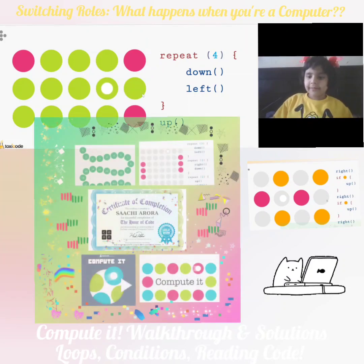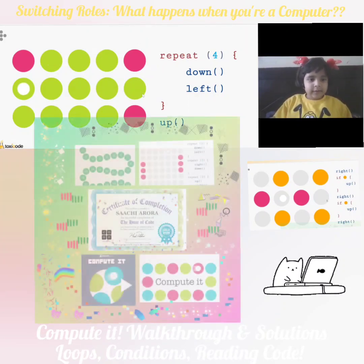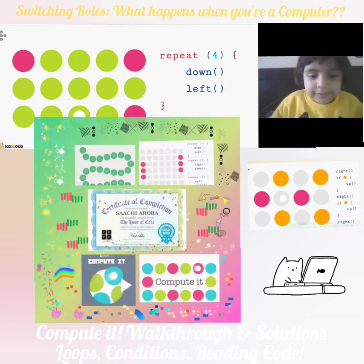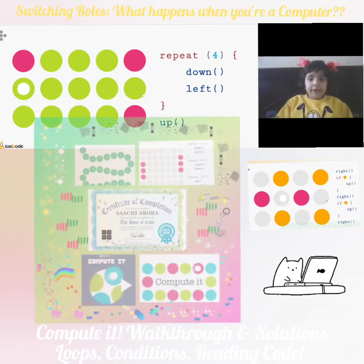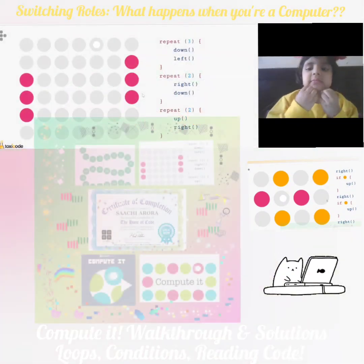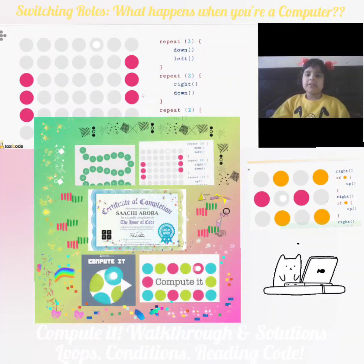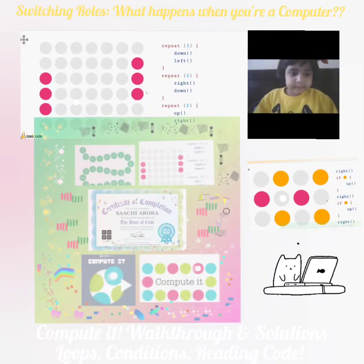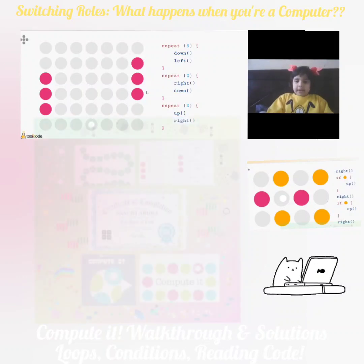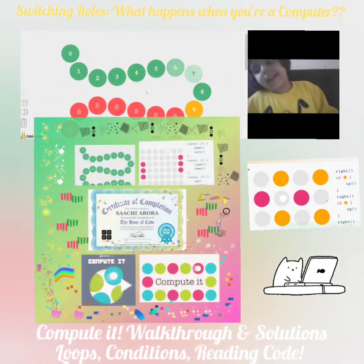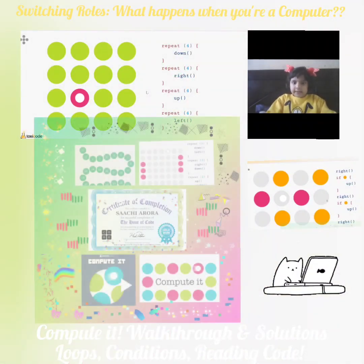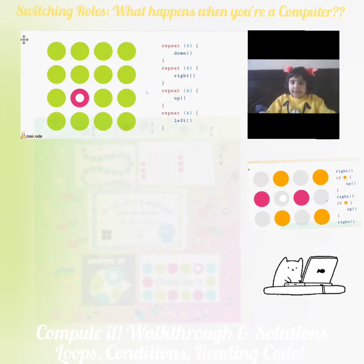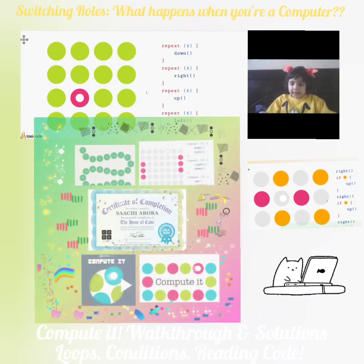Let's count: 1, 2, 3, 4. We're gonna repeat this — 1, 2, 3, 4, so easy. And repeat four times going down: 1, 2, 3, 4. And repeat four times: 1, 2, 3, 4. And repeat four times: 1, 2, 3, 4. So simple.